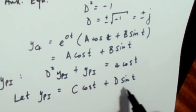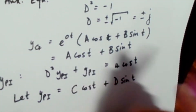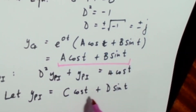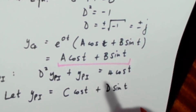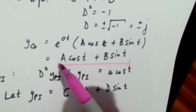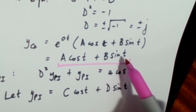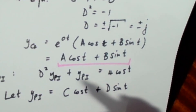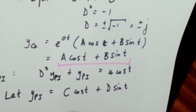But if you look at this trial function and compare it to your complementary function, you'll see that the form is exactly the same — you have a constant in front of cosine t and a constant in front of sine t in both. So this trial function is not going to work. You can go ahead and try if you want, but you're going to get an answer that doesn't make any sense. So we need to change the form of this trial function into something that will work.